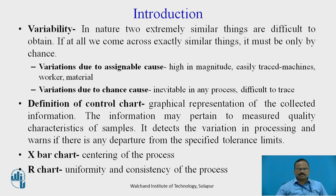There are two types of variation. First, variations due to assignable causes: these are high in magnitude and easily traced or detected, arising from machines, worker, material, and equipment over time. Second, variations due to chance cause: these are inevitable in any process and very difficult to trace out. For example, the play between a nut and a bolt leads to variation — it is very difficult to trace or find out.